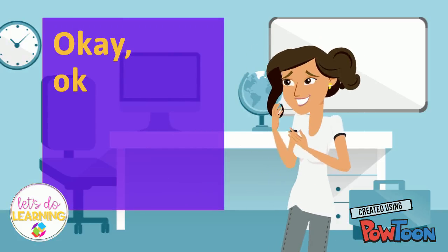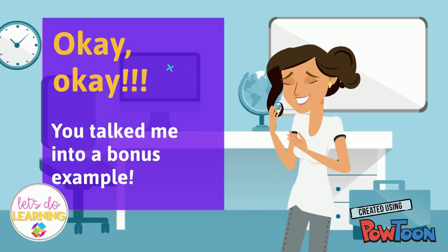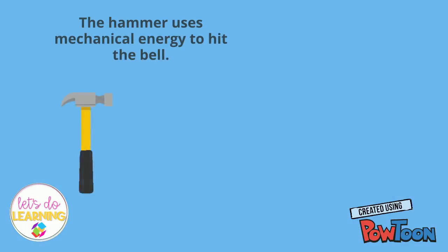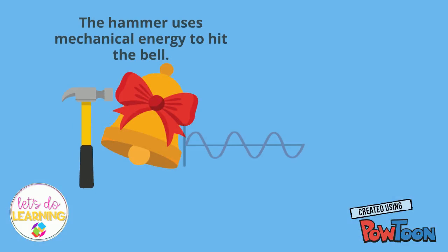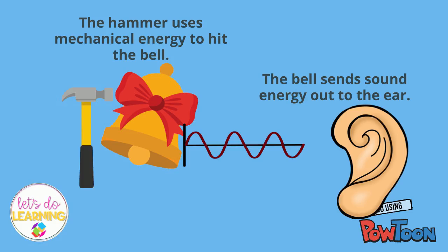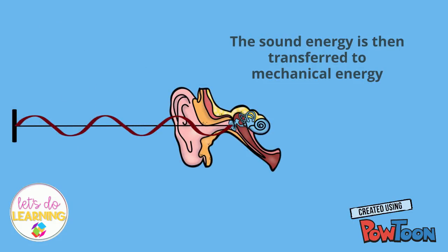You talked me into a bonus example! The hammer uses mechanical energy to hit the bell. The bell sends sound energy out to the ear. The sound waves enter the ear canal and vibrate against the eardrum. The sound energy has been transferred to mechanical energy and sent to the brain.